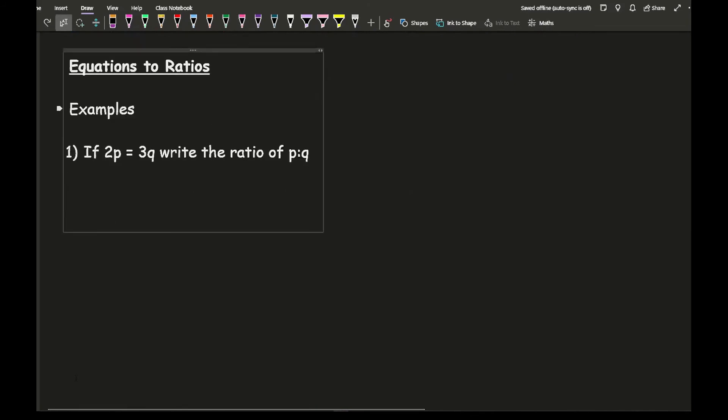Now let's work in the opposite direction. In these questions, we've been given an equation, and we need to write down the ratio. As an example, it says if 2p equals 3q, write the ratio of p to q. I've got 2p equals 3q. What you want to do is get letters on one side and numbers on the other. I'm going to have my letters on the left-hand side and numbers on the right. I start by getting rid of this 2 by dividing by 2. I end up with p equals 3q over 2. Then let's get rid of this q by dividing by q.